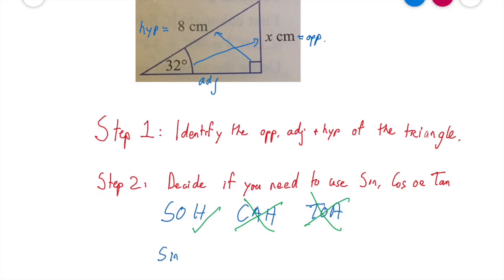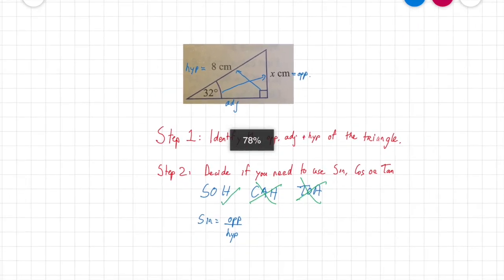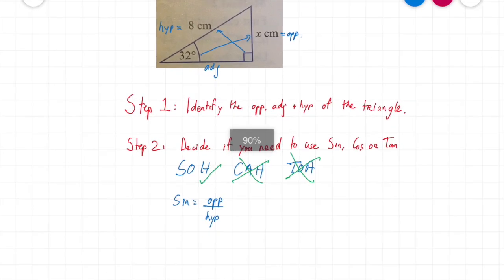So that means sine equals opposite over hypotenuse. So that's what we're going to use. Let us continue on into step three.